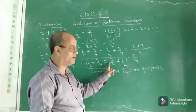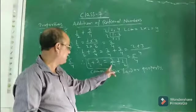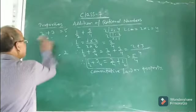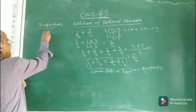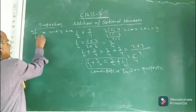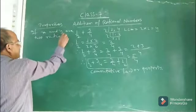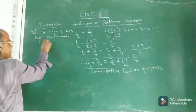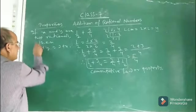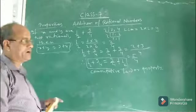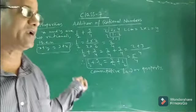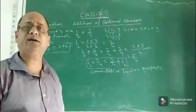This is the commutative law or commutative property of addition. Instead of taking specific numbers, we can use symbols. If X and Y are any two rational numbers, then the commutative property of addition says that X plus Y will always be equal to Y plus X. There are many more properties which we will discuss in the next class. I hope you understood what I explained today. We will see in the next class.